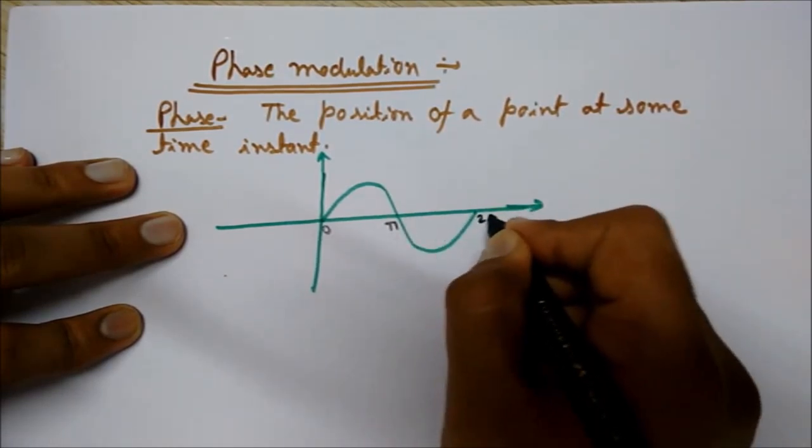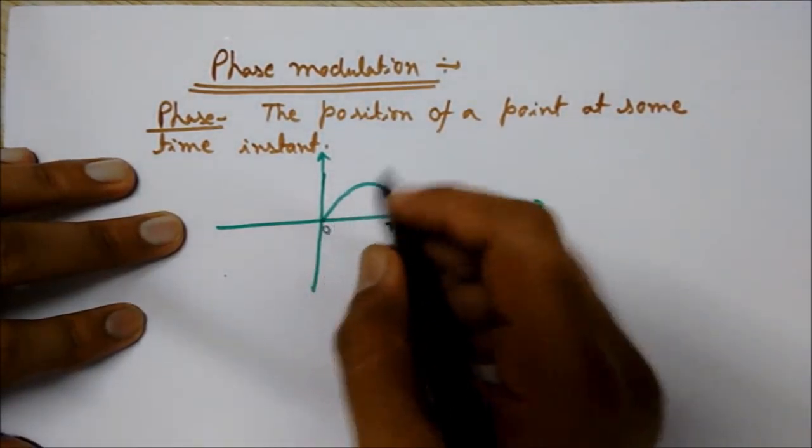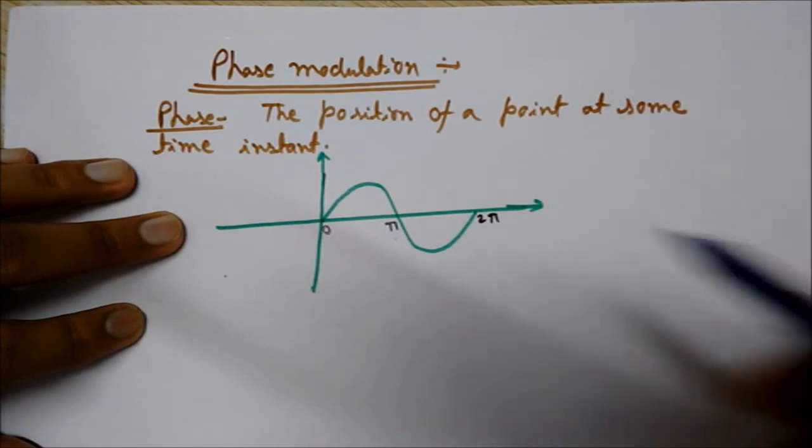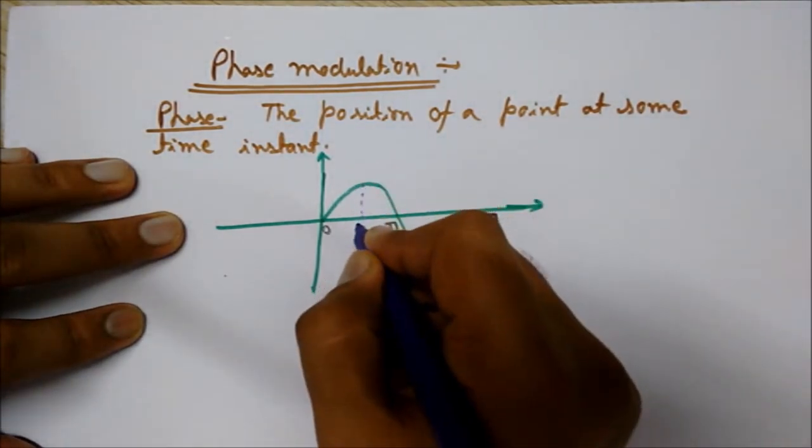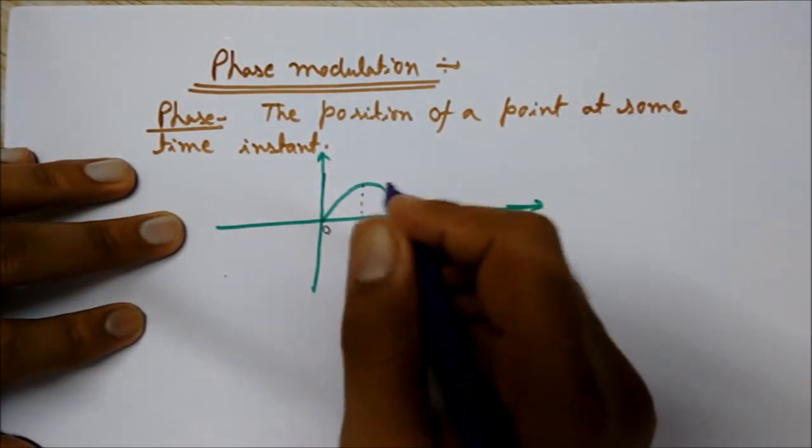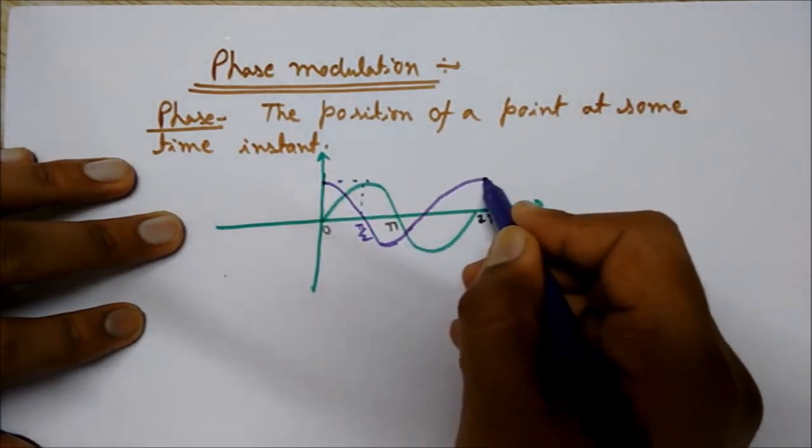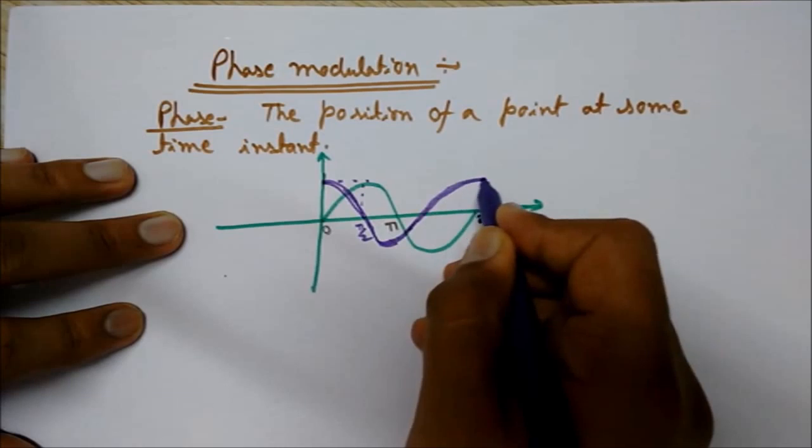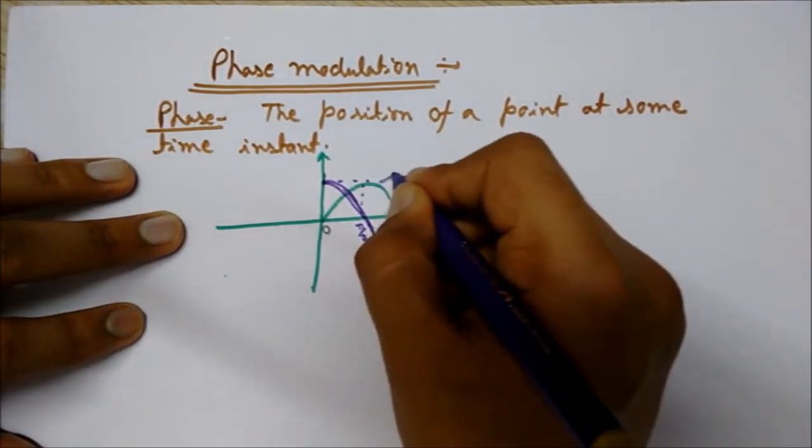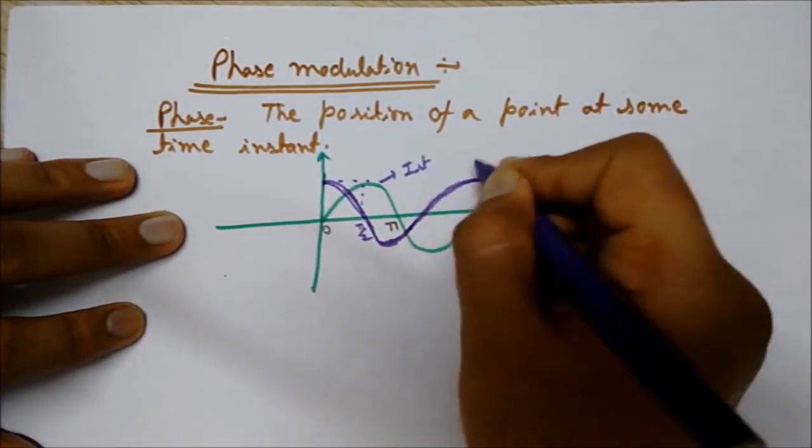This is zero, pi, two pi radians. This one is the first wave and this is the pi by two. This is another sinusoidal wave. This is the first wave. Let's call it first.